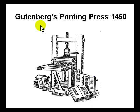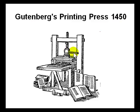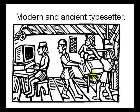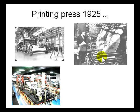Gutenberg was one of the first to create a printing press, around the 1450s. You press it down on paper and you get printed paper out of it. The modern person uses a computer, while the ancient typesetter used the printing press.